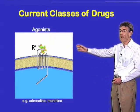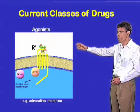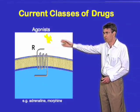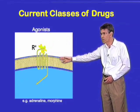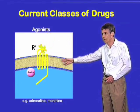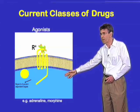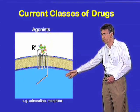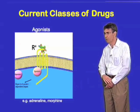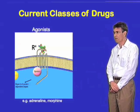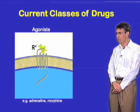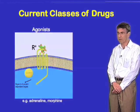This animation depicts an agonist interacting with a receptor and changing its conformation or shape so that it can signal. Two examples of agonists which work through this particular family of seven transmembrane receptors are adrenaline and morphine.